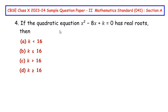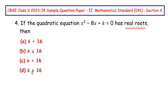This question is from the quadratic equations chapter. If the quadratic equation x² - 8x + k = 0 has real roots, then: k is less than 16, k is less than or equal to 16, k is greater than 16, or k is greater than or equal to 16. We have to find out the value of k — specifically, which inequality to choose.